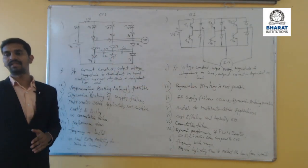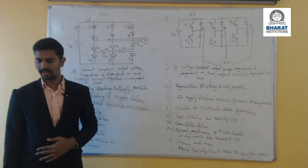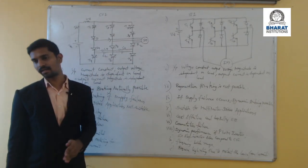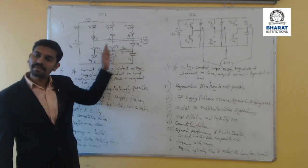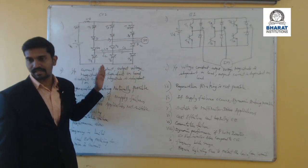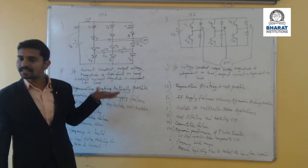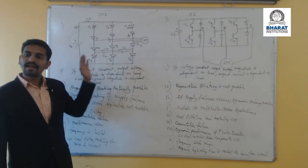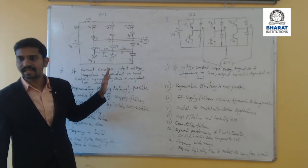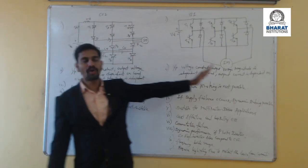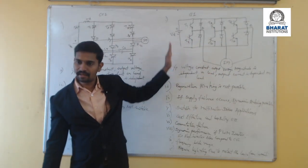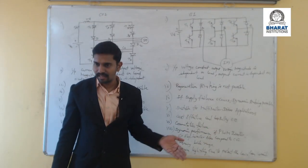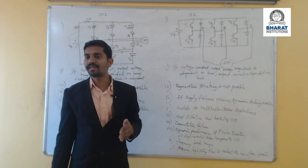This is the general comparison between voltage source inverters and current source inverters. By seeing the circuit diagram itself, we can identify whether it is VSI or CSI. In current source inverters, the input side has inductance and capacitors. The capacitors take care of commutation failure of the thyristors, so commutation failures cannot happen in current source inverters.